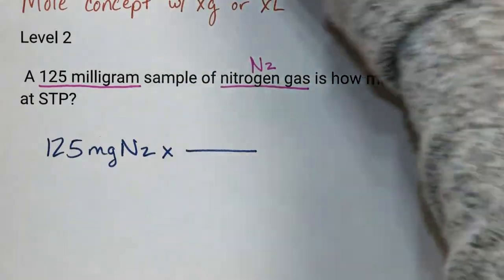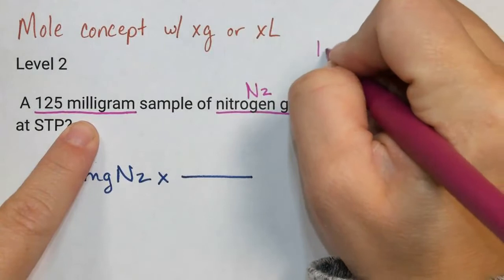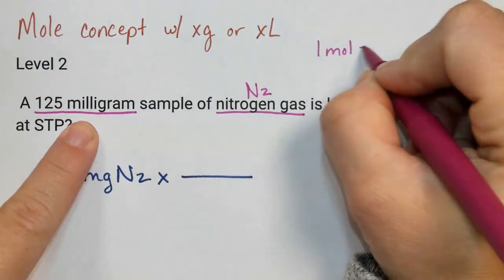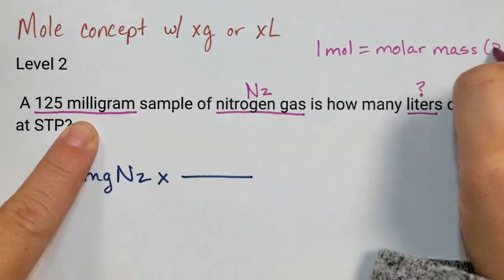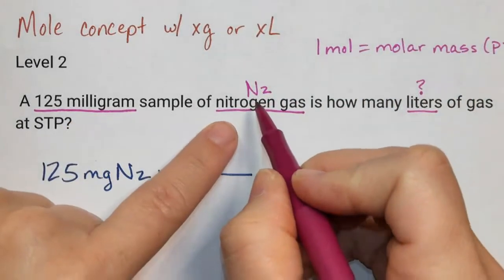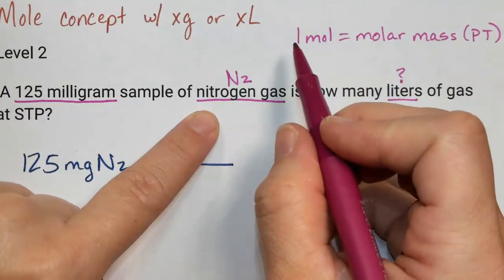Now up here, I want to jot down what I know. I know that one mole is equal to the molar mass from the periodic table. So I would go add up the grams of nitrogen on the periodic table, and that would be equal to one mole.